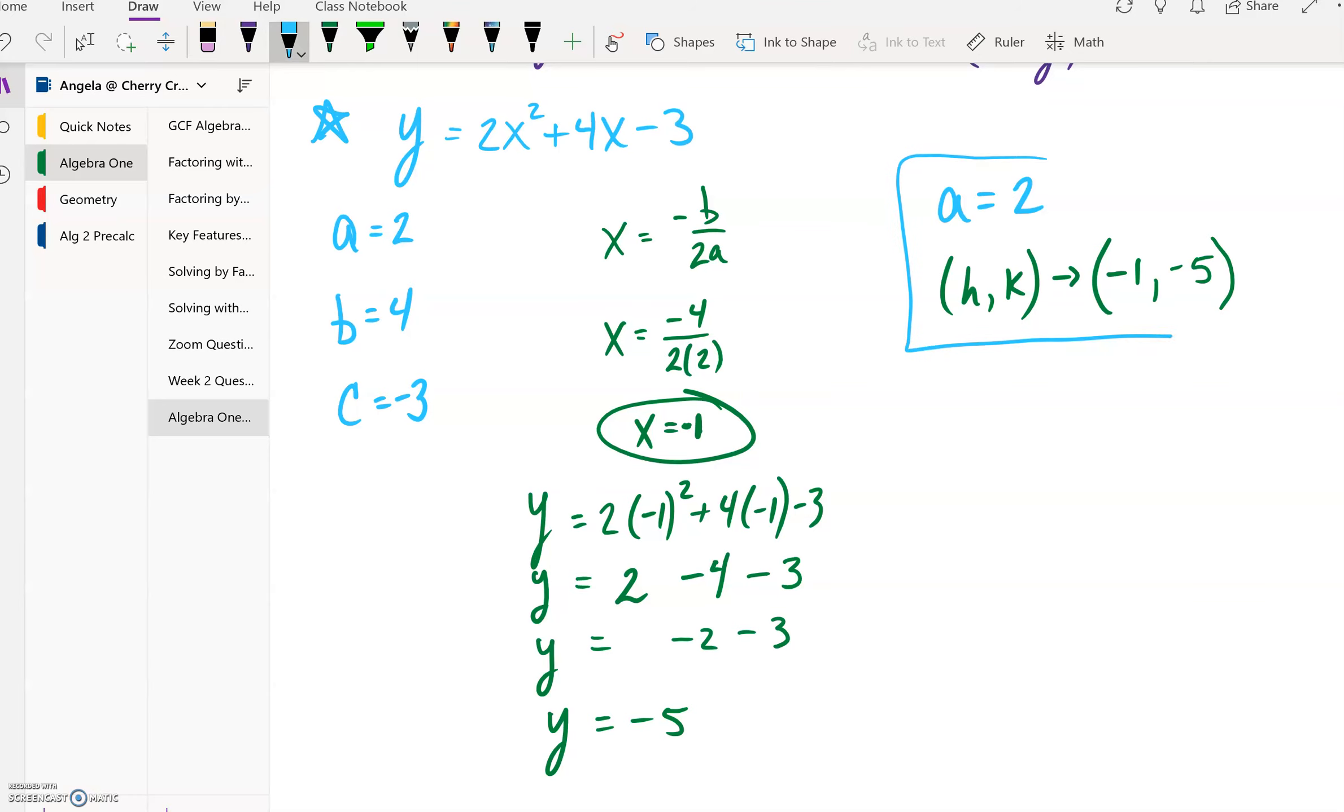So here comes the last step: we're going to put these two pieces together—this a = 2 and our (h, k)—and you just drop them right into your formula.